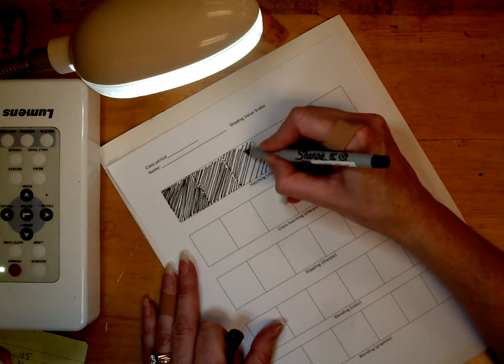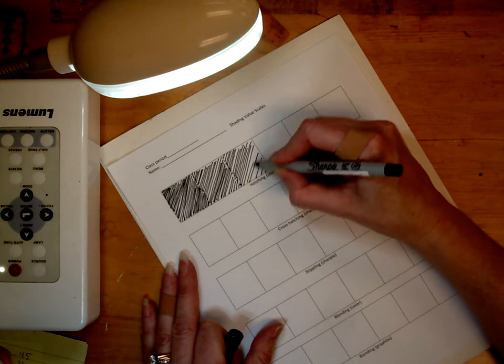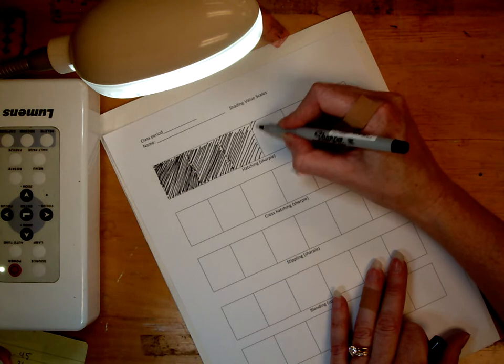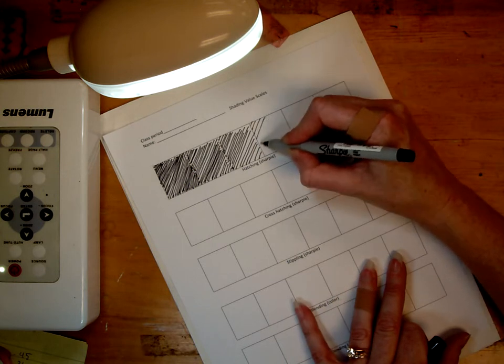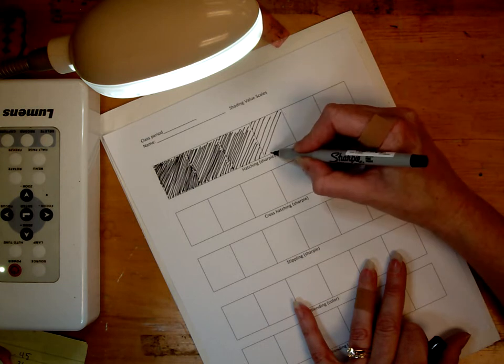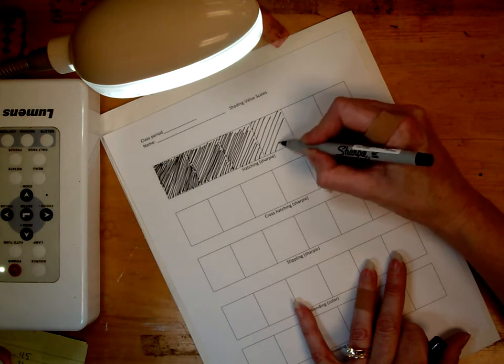We want it to be a gradual transition so we have fewer lines, fewer lines each time. This one is even less and more space. There are lines but they are controlled and neat.